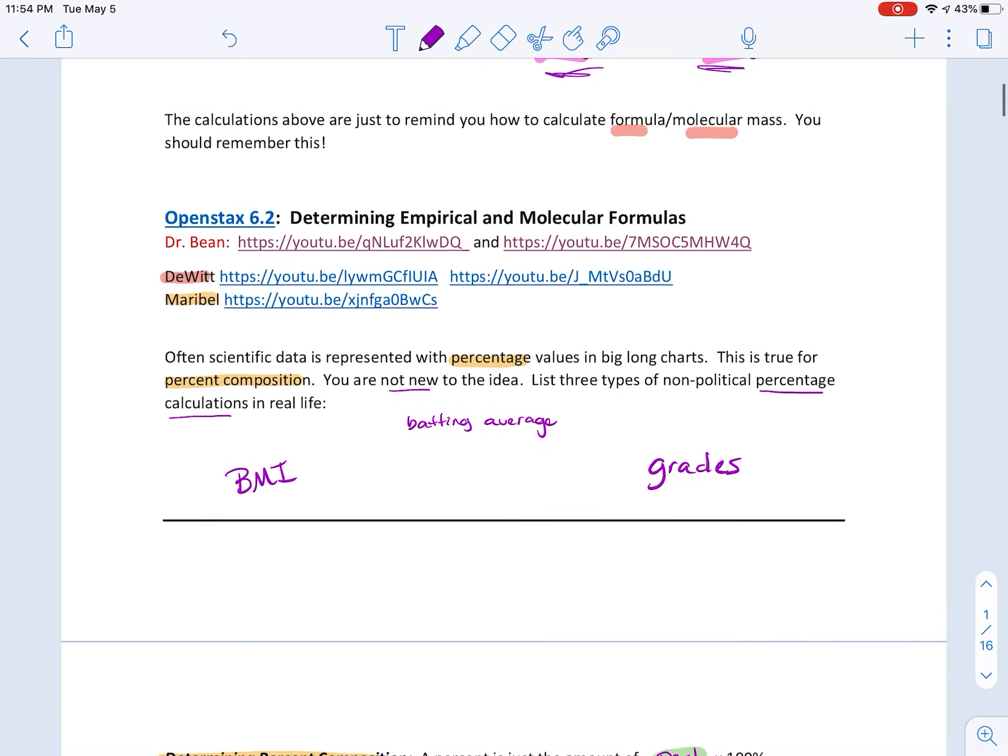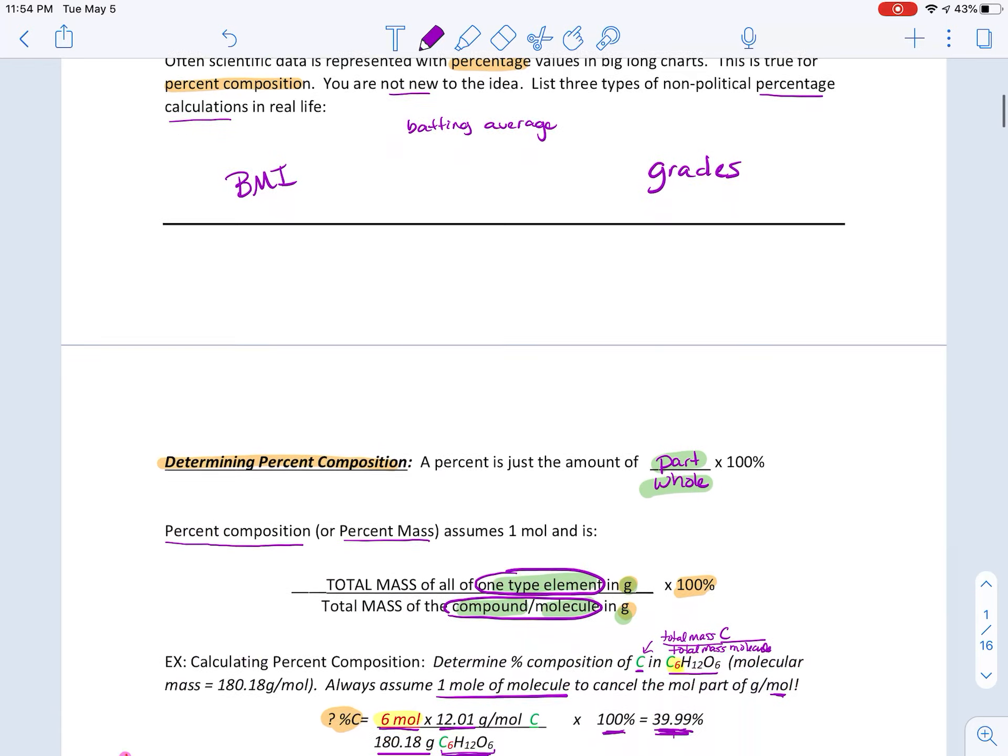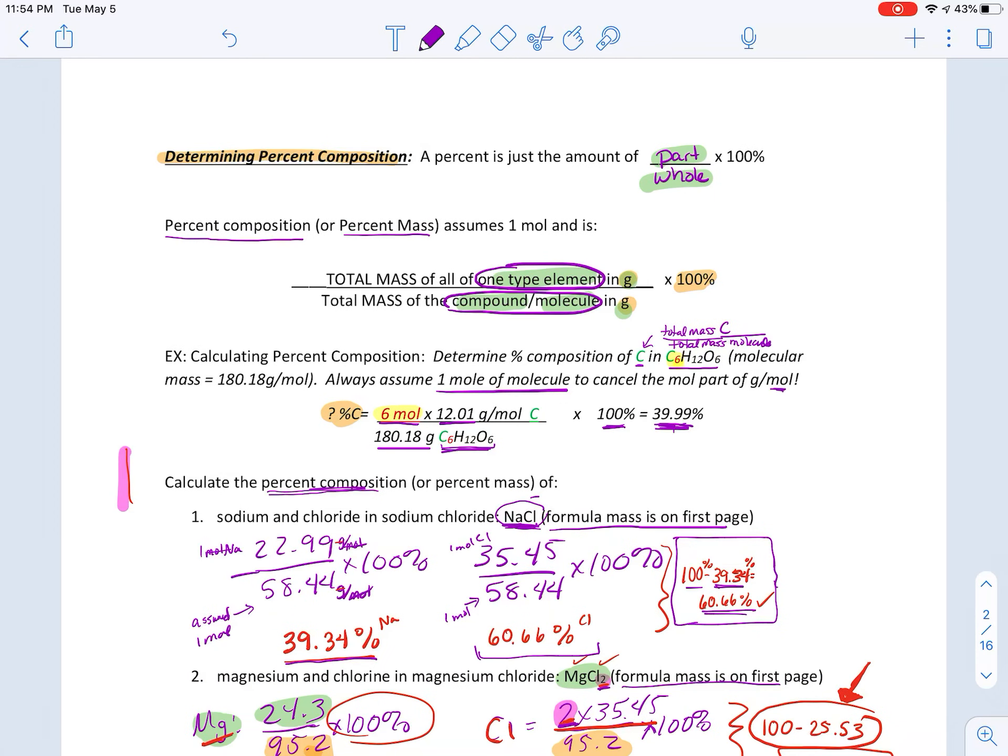And then this is the chapter that has like three different kinds of math in it. And so the first math was determining percent composition, and the percent is the amount of the part over the whole. That's just like any percent. This isn't like a new thing or anything. It's just part over whole. That's a percent.